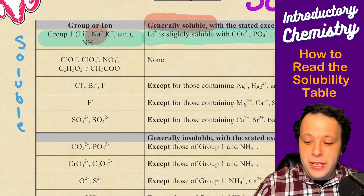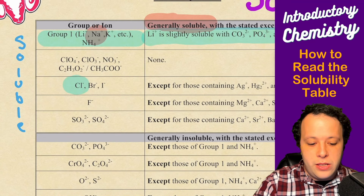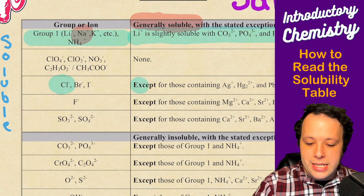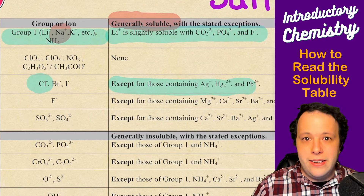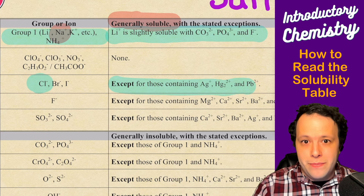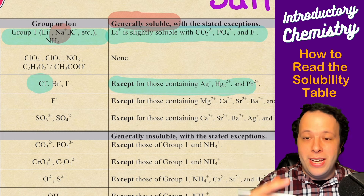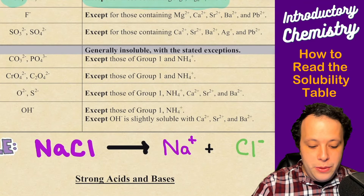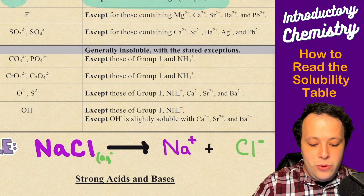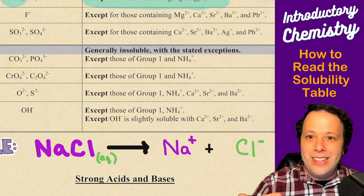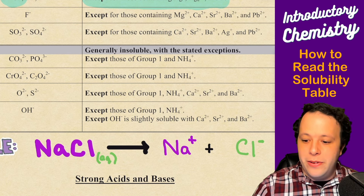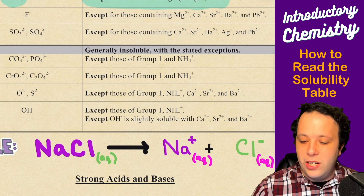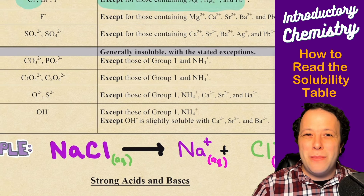There's another way you can look at it too — via the chlorine side. We see chlorine is soluble, except when it's bound to silver, mercury, and lead. Being that it's bound to sodium, and sodium is not one of those three elements, that means once again it's soluble. So what we will do is write AQ next to sodium chloride, meaning that it's going to dissolve. And the way it dissolves is it's going to turn into sodium and chlorine ions.